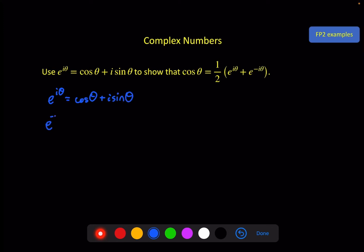And e to the minus iθ gives me cos plus i sin. Then we use that knowledge that we had on a previous slide about cos being the same as cos θ and sin being the same as minus sin θ to write this. Then I can put these two together.